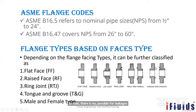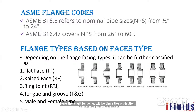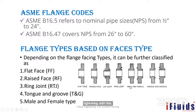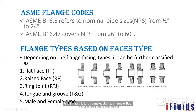The fourth face type is tongue and groove. Here, one flange has a projection (tongue) and the other has a groove, compressing the gasket while tightening with the bolt and nut. The fifth type is male and female — where the male and female flanges connect together, sealing the gasket between them without any leakage.